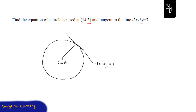We all know that the radius — which is the distance from the center to the point of tangency — is perpendicular to the tangent. So the radius can be considered as a normal line, because a normal is any line which is drawn perpendicular to another line.